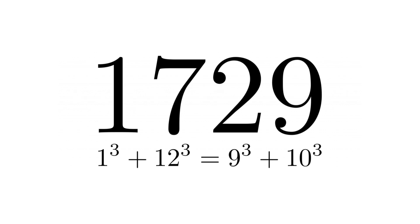He responded by saying that it was, in fact, a remarkable number. It was the smallest number that was the sum of two cubes in two unique ways. 1729 is equal to 1³ plus 12³, and 1729 is also equal to 9³ plus 10³.